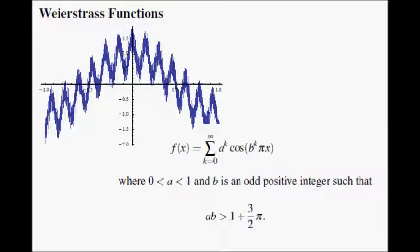So here's how the function is defined. It is an infinite sum of these cosine functions. The one that we see above is generated with this a being 1.5 and b being 13, and I use Mathematica to generate this.